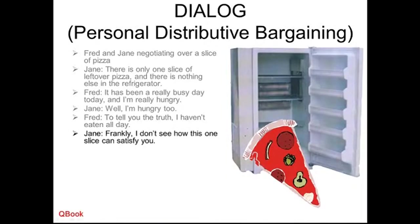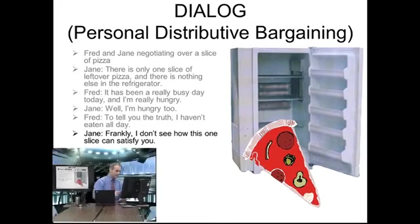Fred tries to say: I'm really hungry, I haven't eaten all day. And Jane says: frankly, I don't see how this one slice can satisfy you. So now we begin to lay out the parameters — what are your goals? Jane tries to tell Fred: your goal is to eat so that you're not hungry, but this piece of pizza is so small, you'll still be hungry anyway. So if you let me eat it, I won't be hungry, because I'm smaller than you. I don't need to eat as much as you — you're not going to be happy anyway, so let me have it.